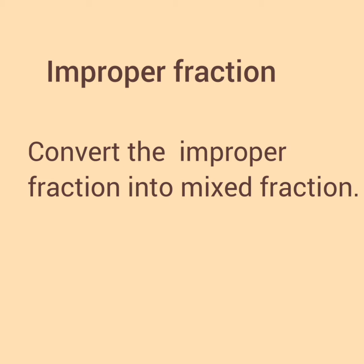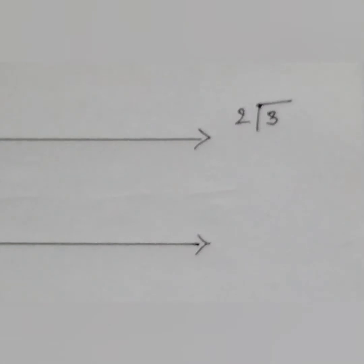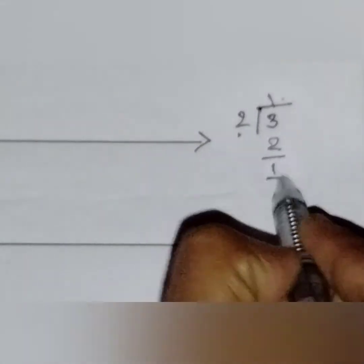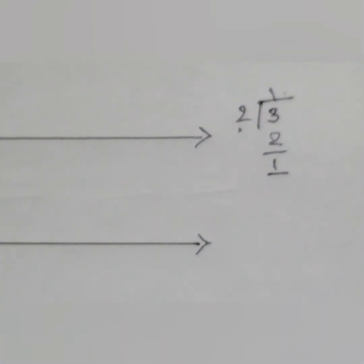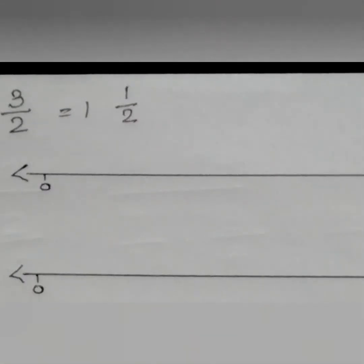Our first step is to convert the improper fraction into a mixed fraction — this we have learned previously. I will just show you how to convert. Take 3/2: we divide by 2, which is the denominator. When we divide, the quotient is 1 and the remainder is 1. So in the mixed fraction, the quotient 1 is the whole number, the remainder 1 is the numerator, and the divisor 2 is the denominator. Our fraction is 1½.